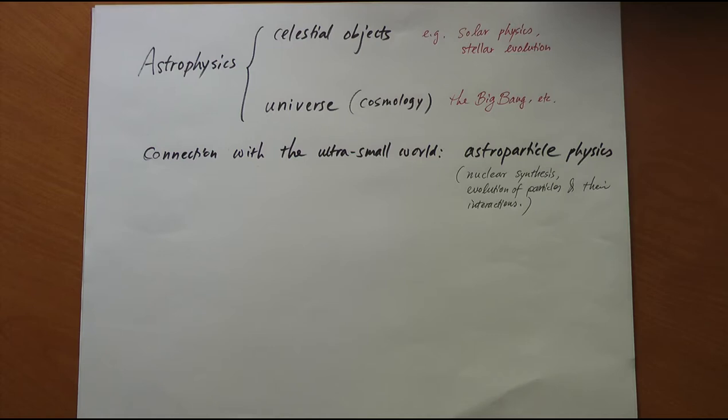Astrophysics is pretty much divided into two parts. One is the study of stellar evolution, basically how celestial objects behave, where they come from, how they evolve, how they die, such as our sun. And the other is the physics of the entire universe, how the universe evolves, and that is called cosmology, including the famous Big Bang theory.